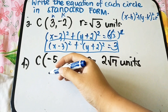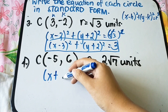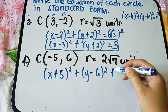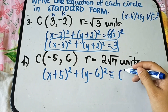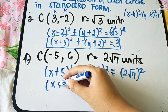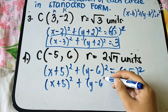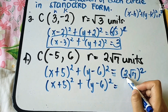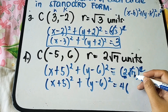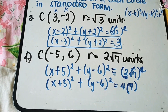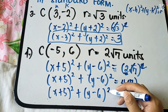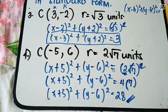Number 4: center is (negative 5, 6) and r equals 2 square root of 7. Substituting: (x plus 5) squared plus (y minus 6) squared equals (2 square root of 7) squared. To simplify: 2 squared gives 4, and (square root of 7) squared gives 7, so the answer is 4 times 7 equals 28. This is your standard form.